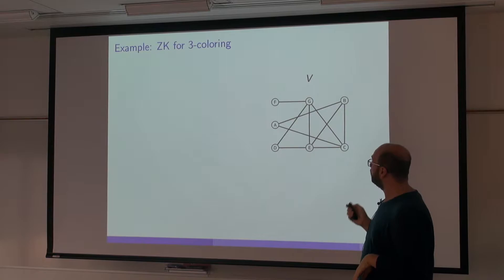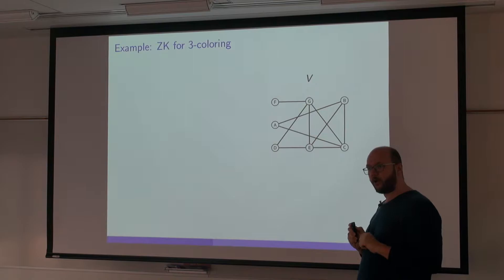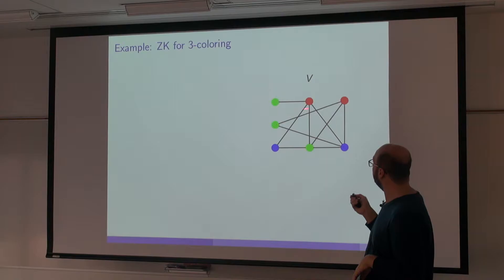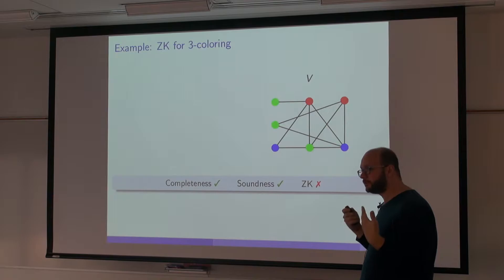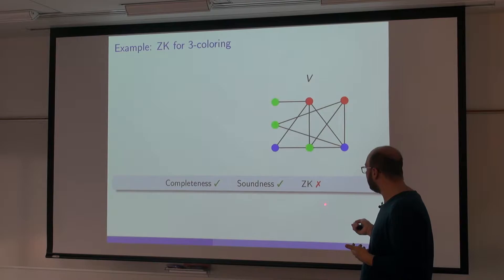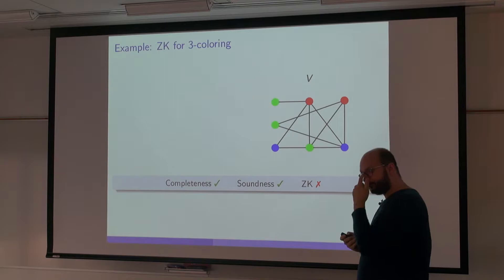Let me give an example to make the definition clearer. Say the verifier wants to find out if a graph is three-colorable — can we paint each vertex so that for every edge, two endpoints do not have the same color? A simple way is asking the prover for a coloring. The prover can brute-force search for such a coloring and send it to the verifier, who checks each edge. It's not hard to see this is complete and sound — if the graph is not three-colorable, no matter which coloring the prover gives, the verifier will find some edge whose endpoints are monochromatic. But it's far from being zero-knowledge, because the verifier has learned the coloring, which she could not have found by herself.